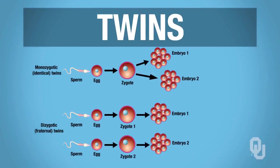How are twins derived? With identical twins, the morula splits, and when the morula splits you wind up with two different embryos—so you have identical twins. Fraternal twins, on the other hand, is where you actually have two different eggs that are fertilized by two different sperm.